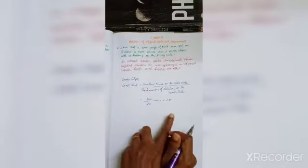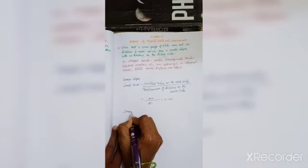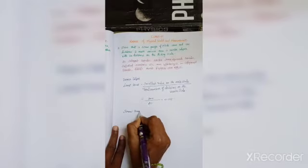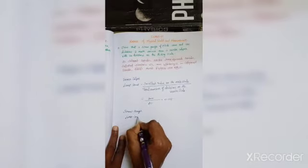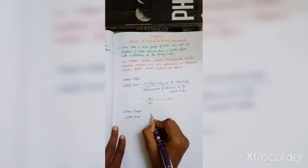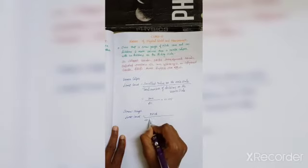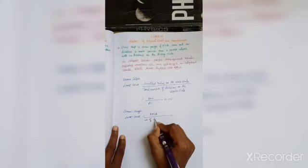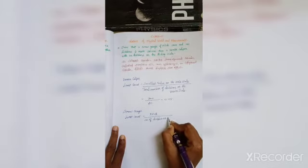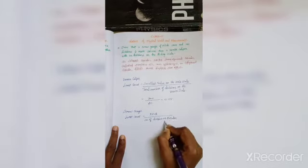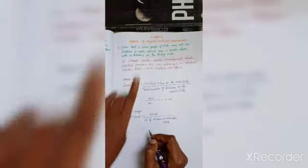So the least count of vernier caliper is 0.05 mm. Next, we will calculate for screw gauge. Pitch is 1 mm.